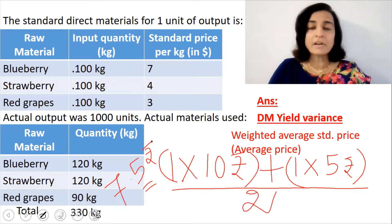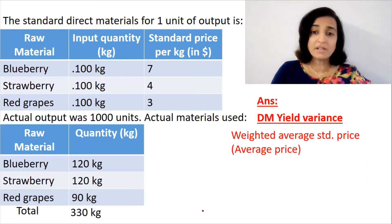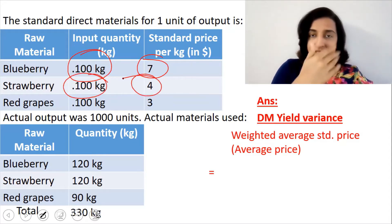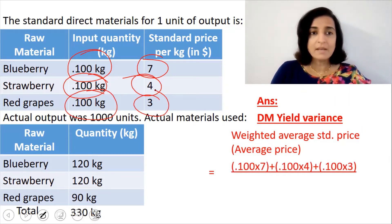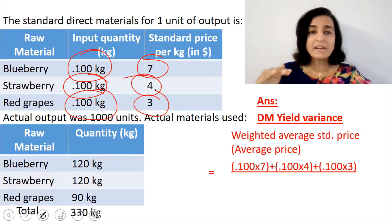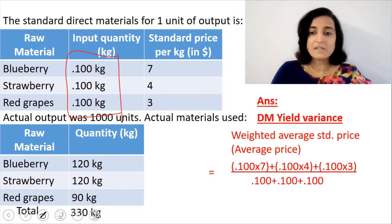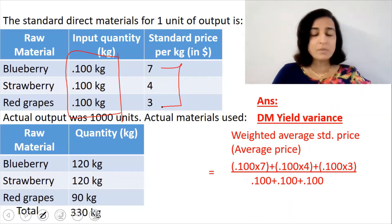What we are trying to find out is value divided by quantity. In the numerator, it is quantity multiplied by price for each material: 0.1 into 7, plus 0.1 into 4, plus 0.1 into 3, divided by the total quantity, which is 0.1 plus 0.1 plus 0.1. Always note that the result will be a number between 3 and 7 — that is, between the highest price and the lowest price. So the weighted average standard price is $4.67 per kg.